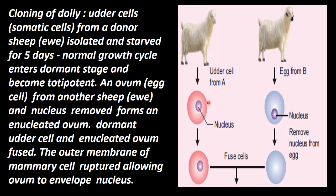The nucleus of the cell has become totipotent. From another sheep, an ovum or egg is taken. The nucleus is removed from this egg, forming an enucleated ovum. The nucleus is removed.